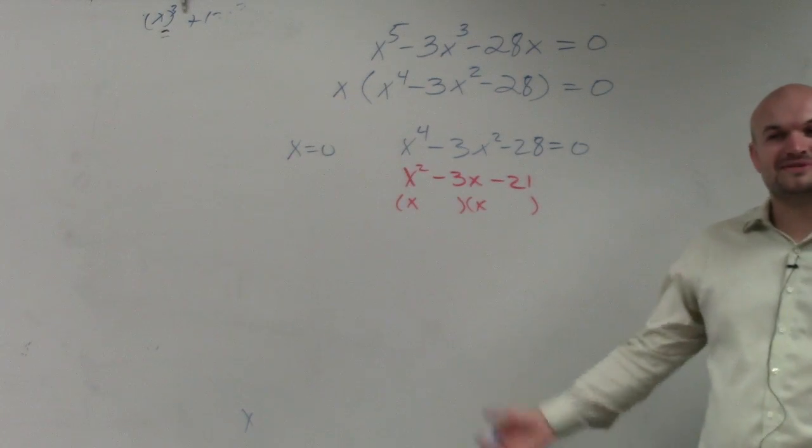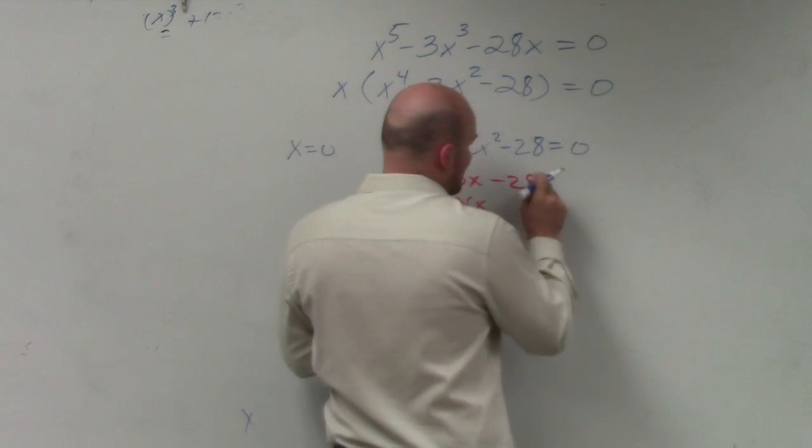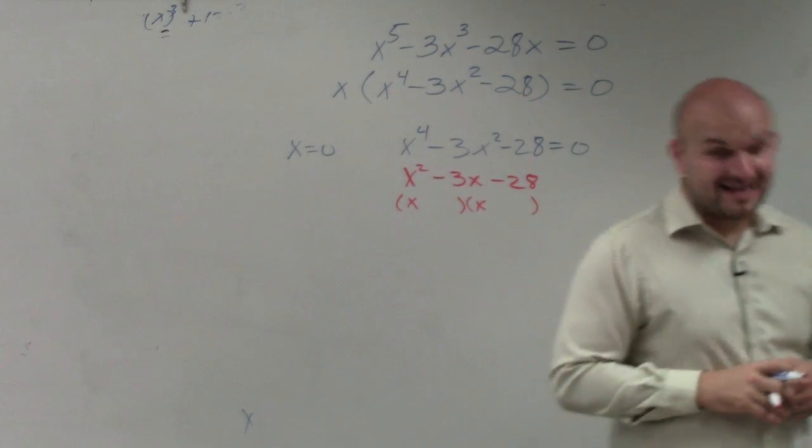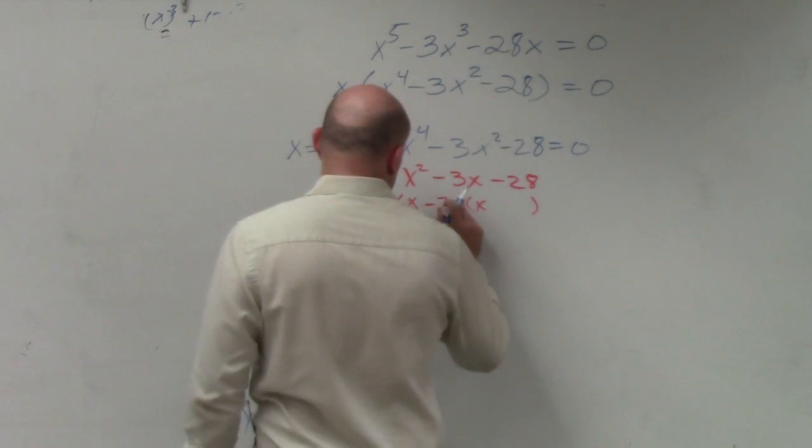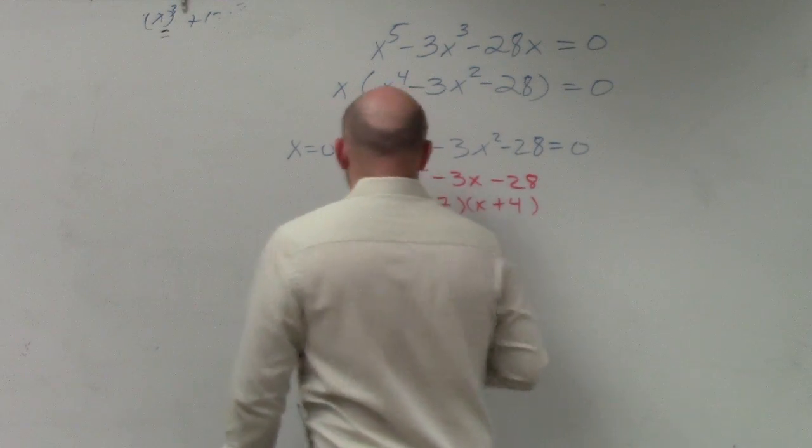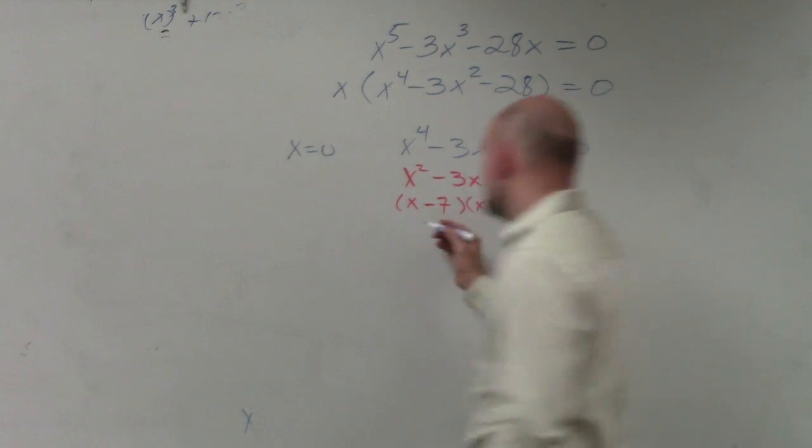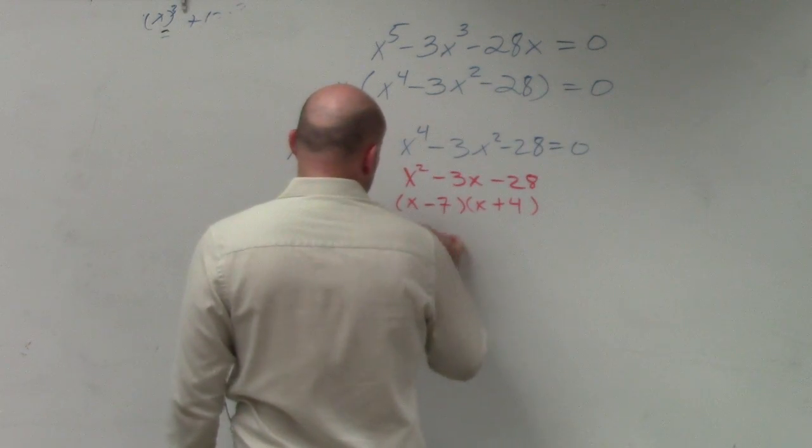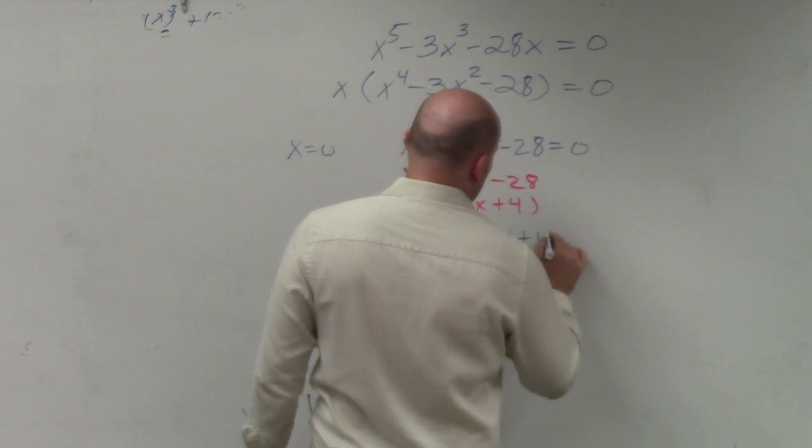So what two numbers multiply to give you negative 28, but add to give you negative 3? Negative 7 and positive 4. Correct? So that's our factors. We know the numbers that we can use to factor this out is x minus 7 times x plus 4.